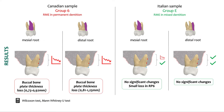In these graphs and pictures, you can notice that the average buccal bone plate thickness loss was 0.8 to 1 mm depending on the type of root in the permanent molars group, while in the deciduous group there were no significant changes.